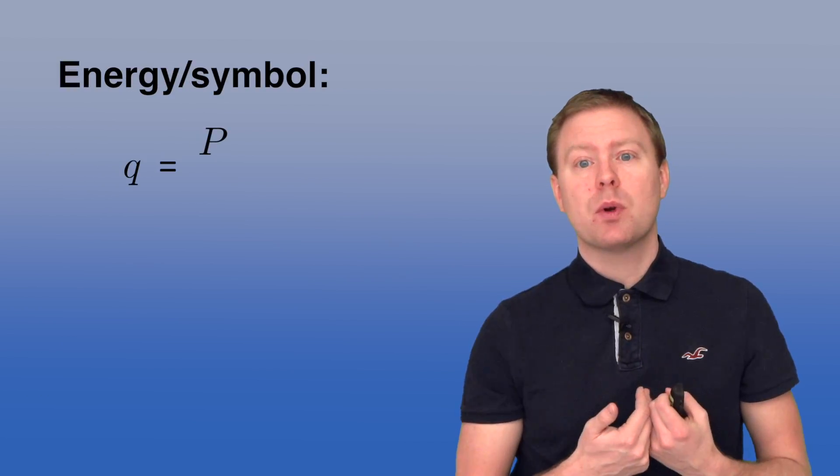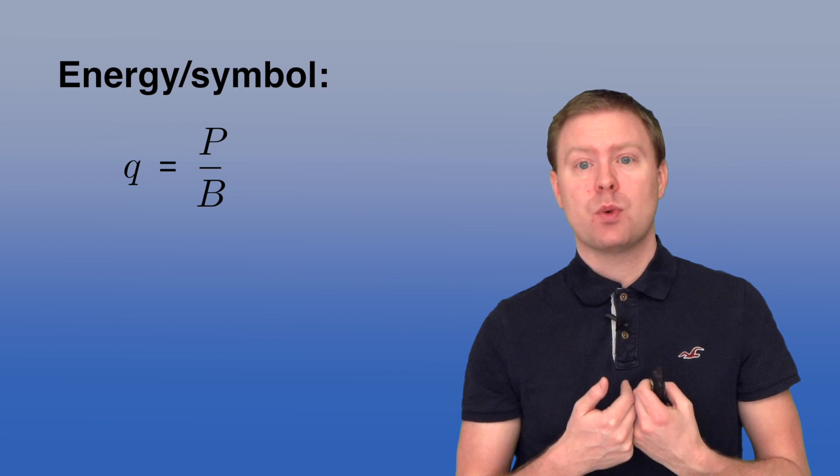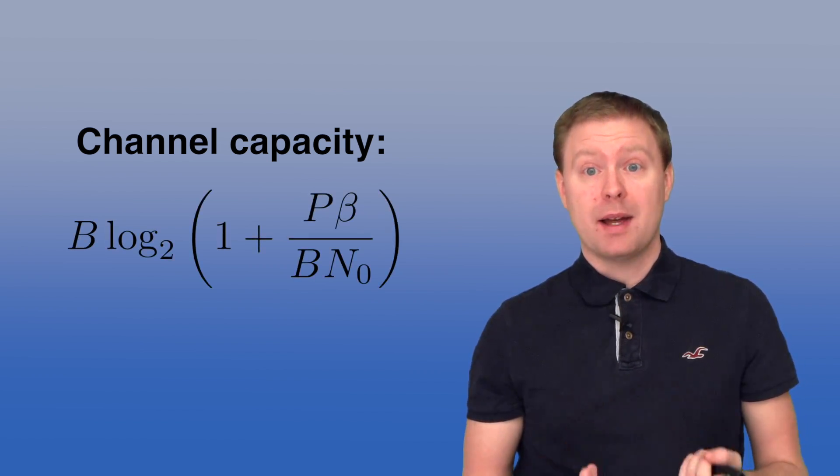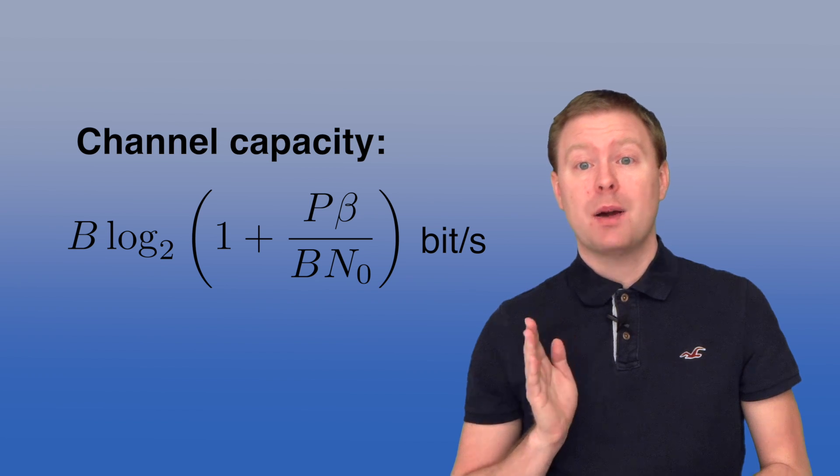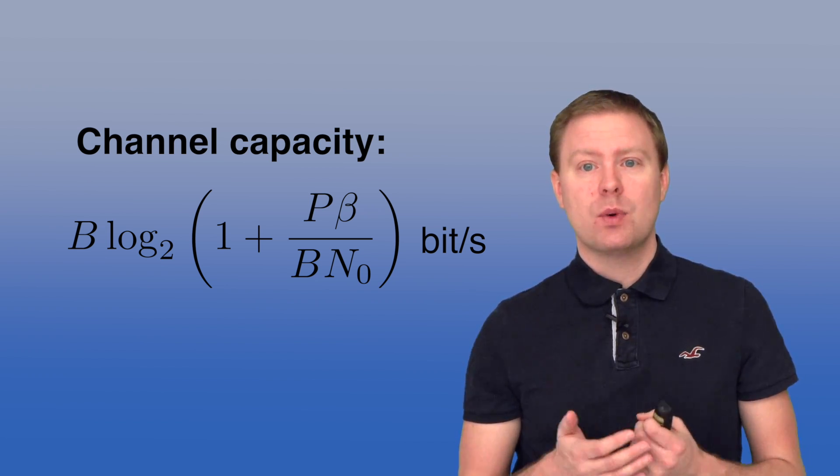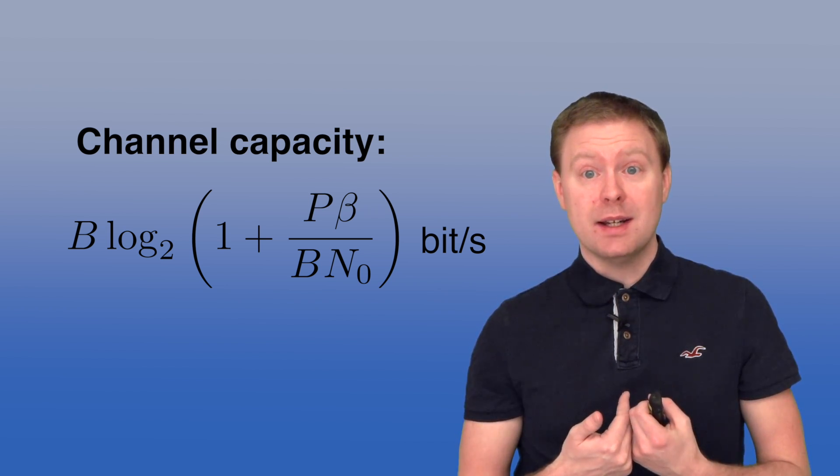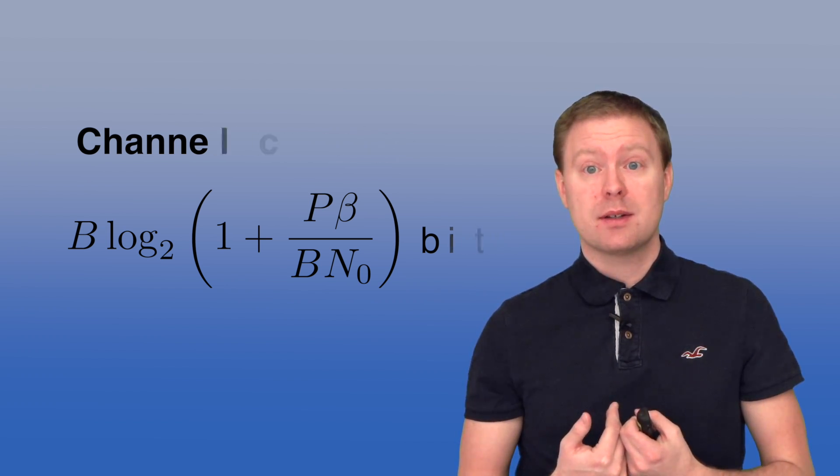In addition, Q is equal to a power P measured in watts divided by B, which was the number of symbols per second. And we put that into the expression, we now have a new expression for the capacity which is equivalent to the previous one, and it's the bandwidth B multiplied with log2 of 1 plus the SNR, now written as the power P multiplied with the channel gain beta divided by the bandwidth times the noise variance N0.